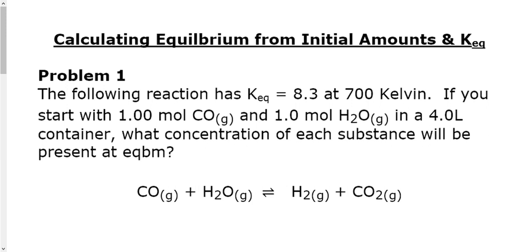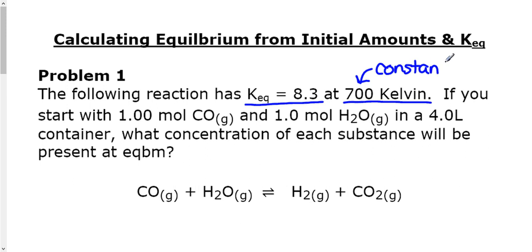There's a lot of information there and we've already got a balanced equilibrium equation given to us. Let's break down what we've got: the Keq is our equilibrium constant, learned about in our first lesson. The temperature of 700 degrees Kelvin — you don't need to do anything with it, it just means temperature is constant throughout the process. If temperature changed, that would shift our equilibrium like we learned with Le Chatelier's principle. We also have starting amounts: one mole of carbon monoxide and one mole of water.